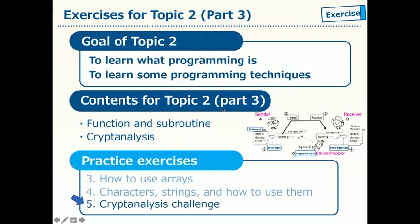Let us start with the practice exercise for the third part of Topic 2. In this part, we studied a method of designing a program using functions or subroutines. Then, as a summary of the whole Topic 2, we discussed an algorithm doing cryptanalysis of ciphertexts created by Caesar Cipher. As a project practice exercise, Project 5, we will be challenging ourselves to cryptanalysis.